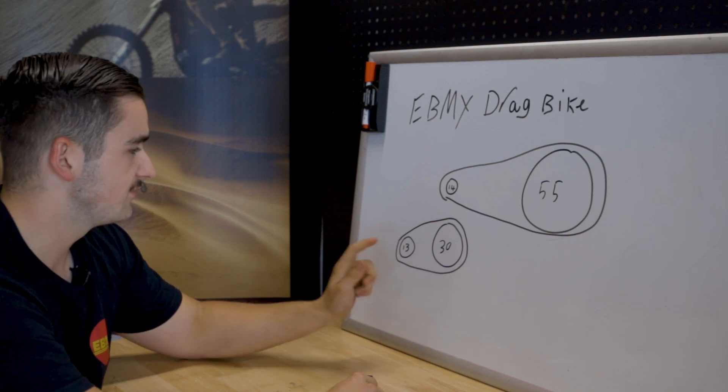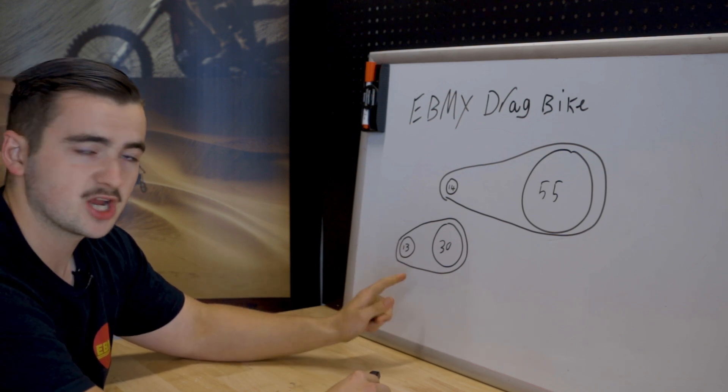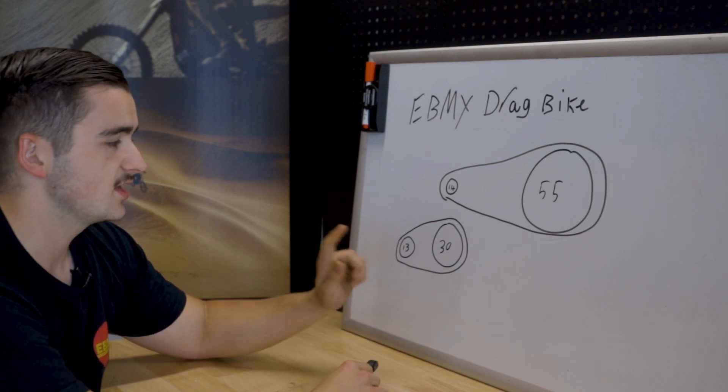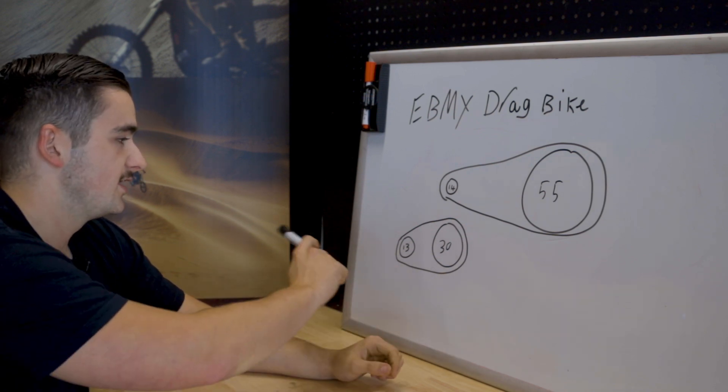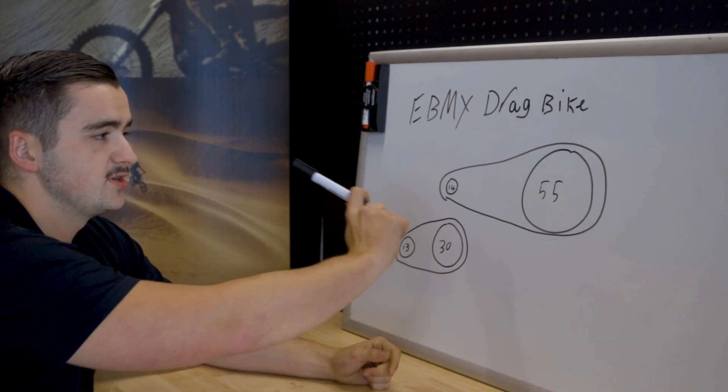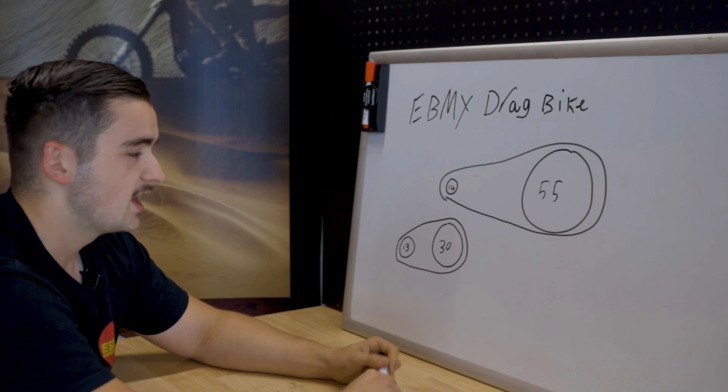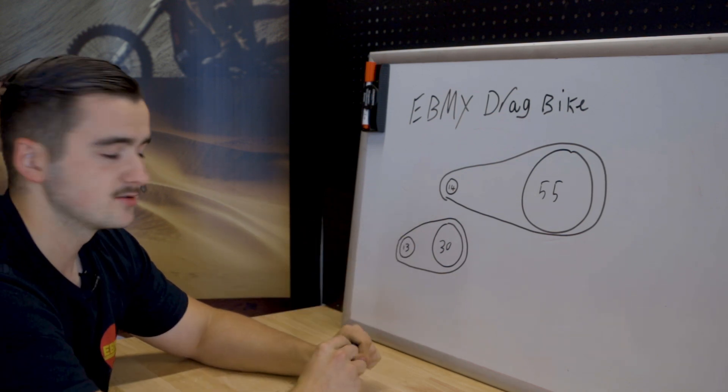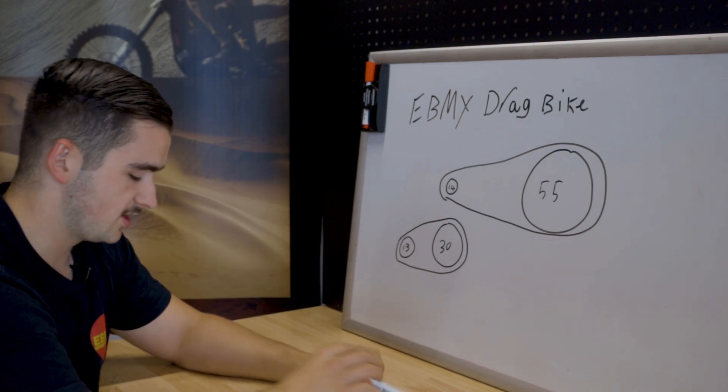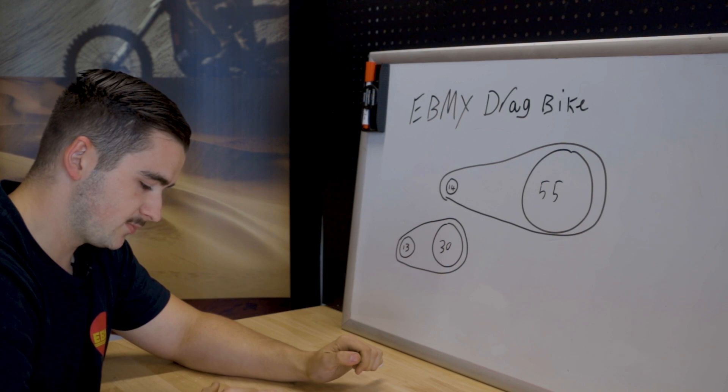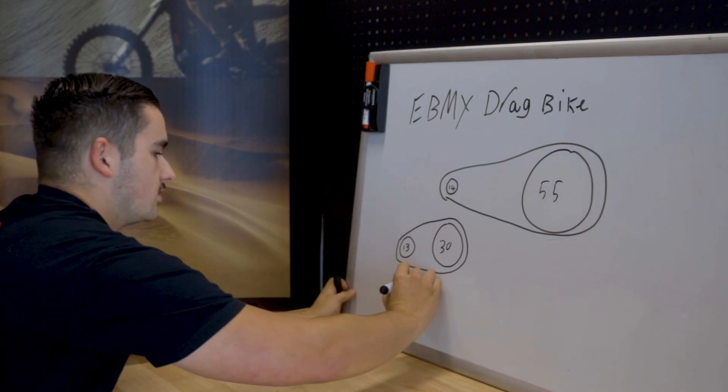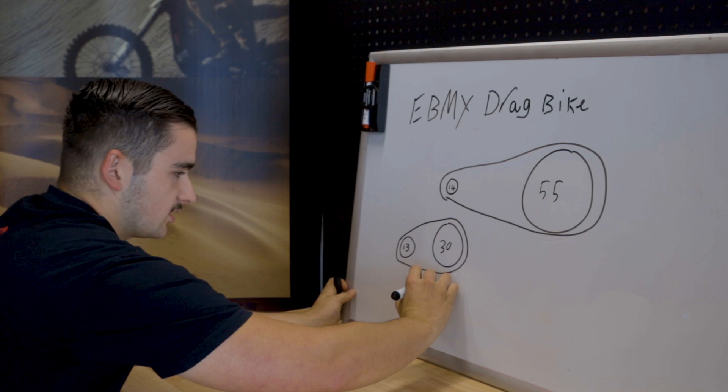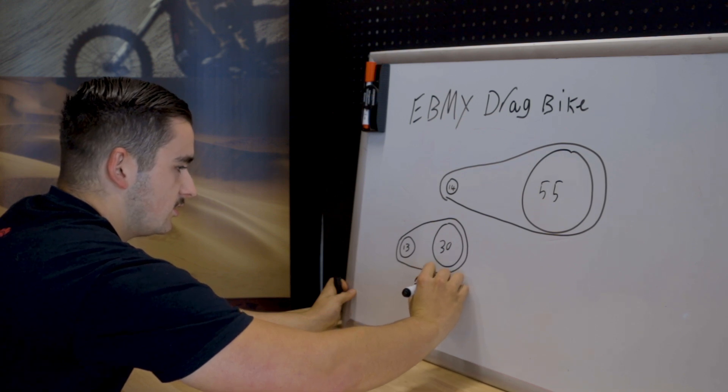So our eBMX drag bike, we have a dirty bike primary chain drive on this one which is 13 and 30. All we need to do to figure this out is we divide these two numbers together and we divide these two numbers together and then we times them together. So if we divide 30 by 13 gives us 2.307.